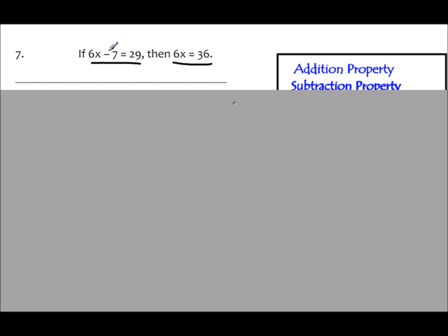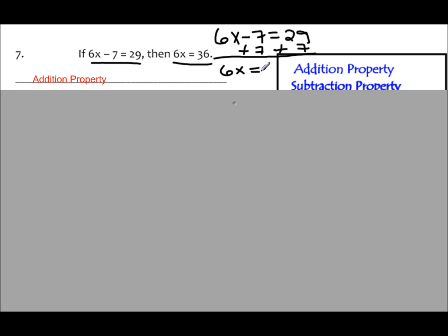Number 7: how did the hypothesis change to reach the conclusion? They're not going to show you the steps in between. If it helps, you can restack it. The original equation is 6x minus 7 equals 29. Your next step would be to add 7 to both sides, leaving you with 6x equals 36. They didn't show the adding step — they just went from the first to the last step. Since you've been in algebra, you should be able to see how the first step became the last step.